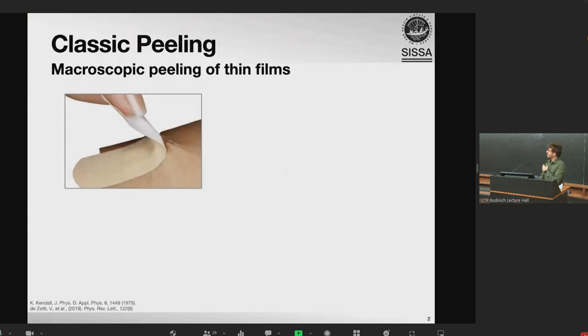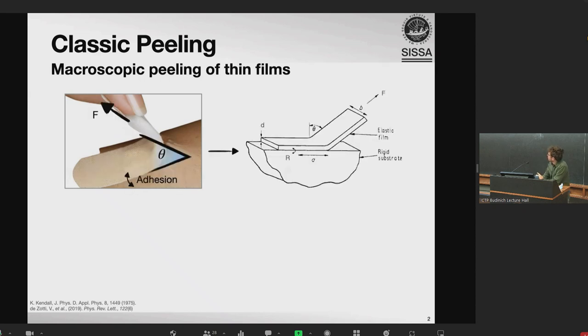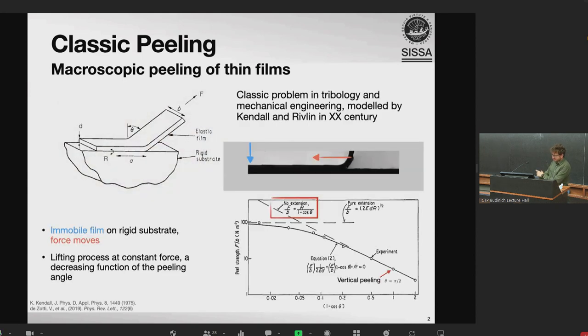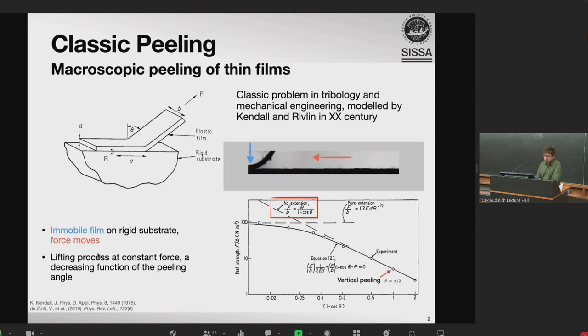So peeling is a concept we are all quite familiar with since we were kids and we had to take off the adhesive tape after we scratched ourselves. And then some of us grew up to be engineers and decided to model this process. And in particular, Kendall and Rivlin in the past century, they described this classic problem of tribology of an adhesive elastic film adhering on a rigid substrate which is peeled at a constant force and angle from the substrate. The peeling here proceeds with the force moving towards the tail which is immobile, and so the peeling proceeds at a constant angle as the film is peeled off the substrate. And Kendall described it with a nice theory, including the elasticity with the force as a function of the peeling angle.